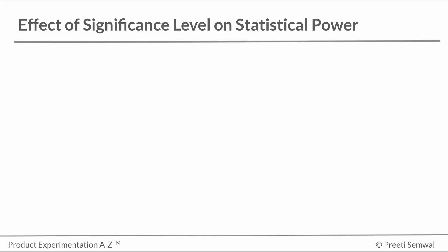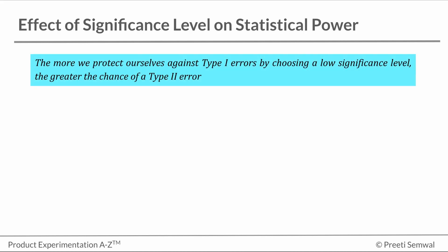There is a trade-off between type 1 and type 2 errors. The more we protect ourselves against type 1 errors by choosing a low significance level, the greater the chance of a type 2 error.